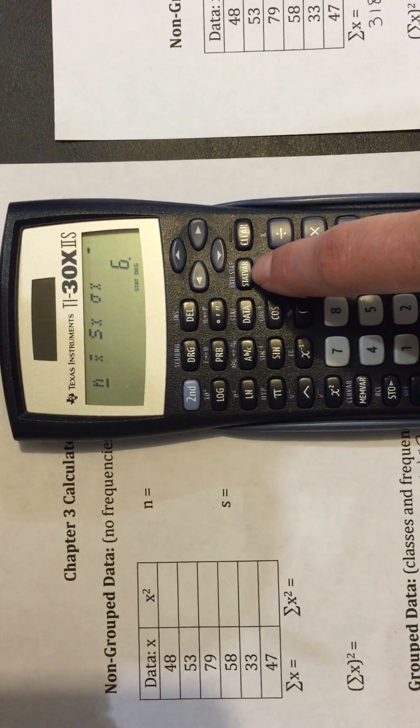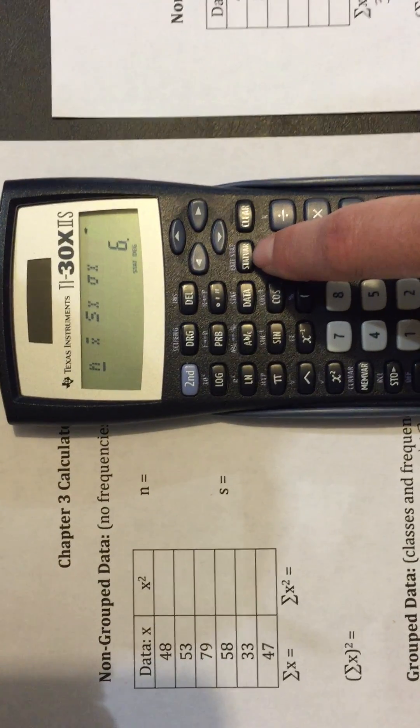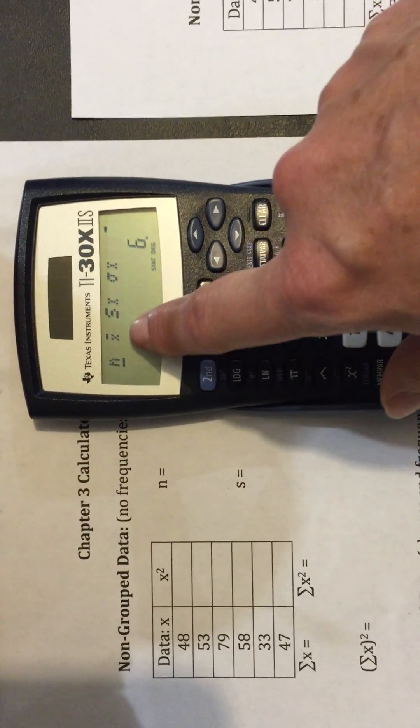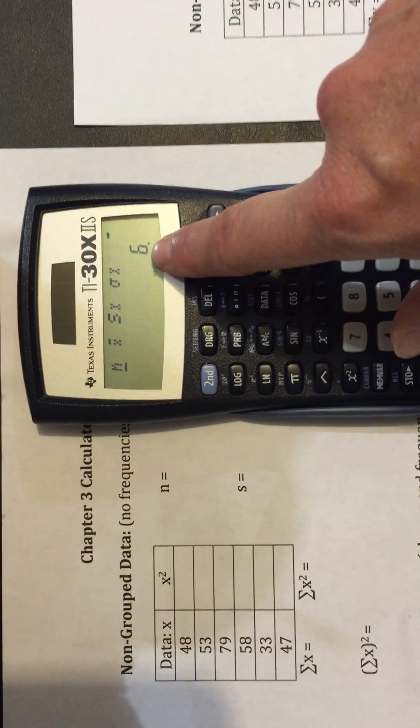Press STAT bar. That'll give you your numbers. Things up top tell you what you're looking at. N is 6.